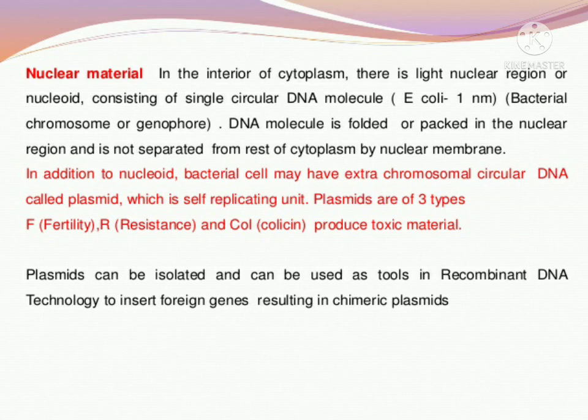Plasmids contain different kinds of genes — like fertility factor genes which help in fertilization, R genes which help in resistance, and colicin genes which we use in biotechnology. Different types of plasmids have different types of genes. The new technology by which we are creating new varieties of fruits and flowers are the result of chimeric plasmids. So this is all for today — the topic 'types of bacterial cell' is complete. Tomorrow we will discuss the next topic. Thank you.